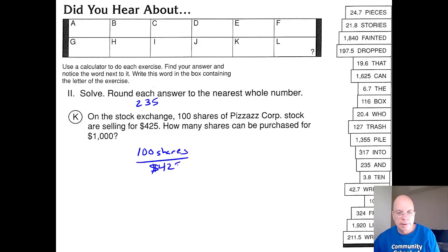equals X per $1,000. The cross products will be: 100 times 1,000 is 100,000, equals 425X. Divided by 425 using the division property of equality, you get 235.29.